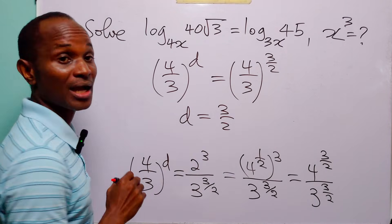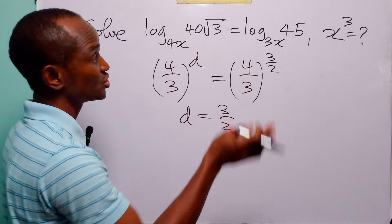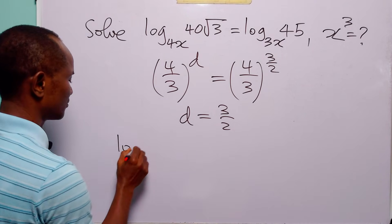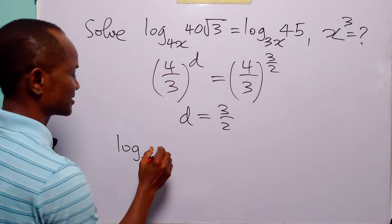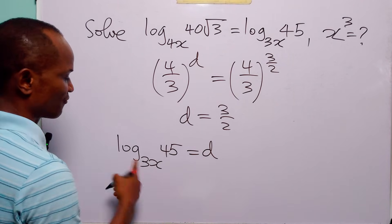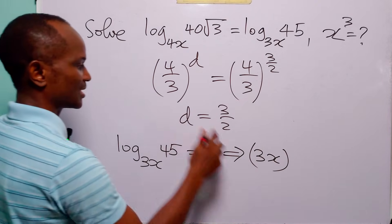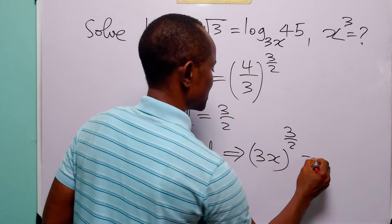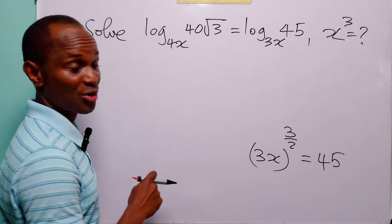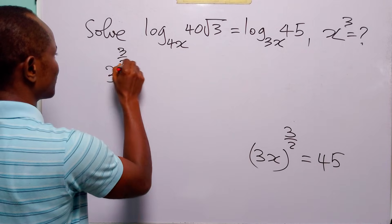Now that we have found d, we can go back to one of the initial equations to find x. Taking the equation log base 3x of 45 equals d, we have 3x to the power d — that is, to the power 3/2 — is equal to 45.